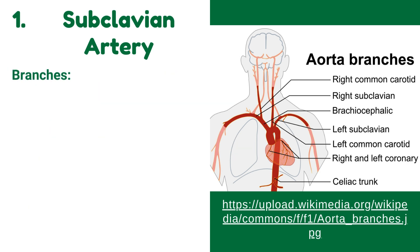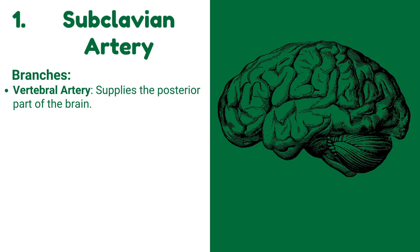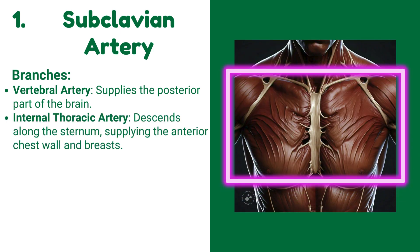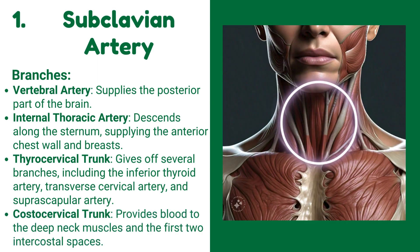Branches of the subclavian artery — it gives four branches. The vertebral artery supplies the posterior part of the brain. The internal thoracic artery descends along the sternum, supplying the anterior chest wall and breasts. The thyrocervical trunk gives off several branches, including the inferior thyroid artery, transverse cervical artery, and suprascapular artery. The costocervical trunk provides blood to the deep neck muscles and the first two intercostal spaces.